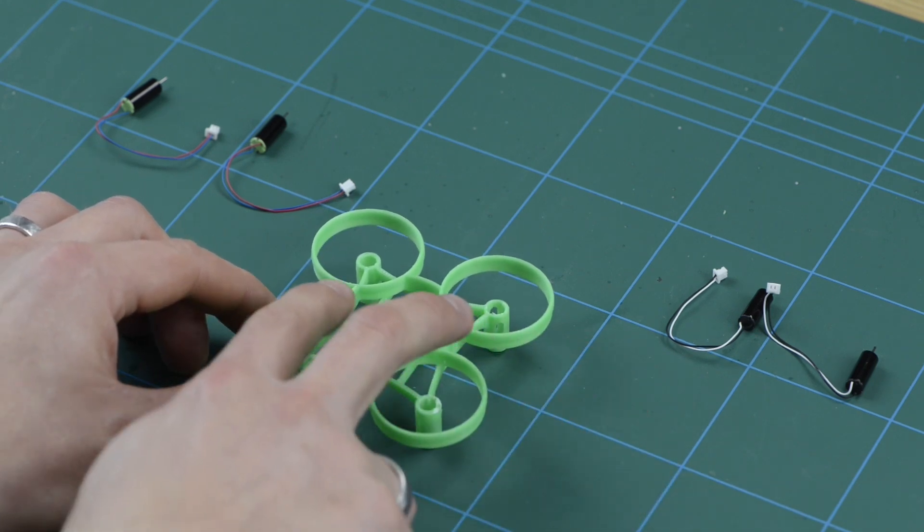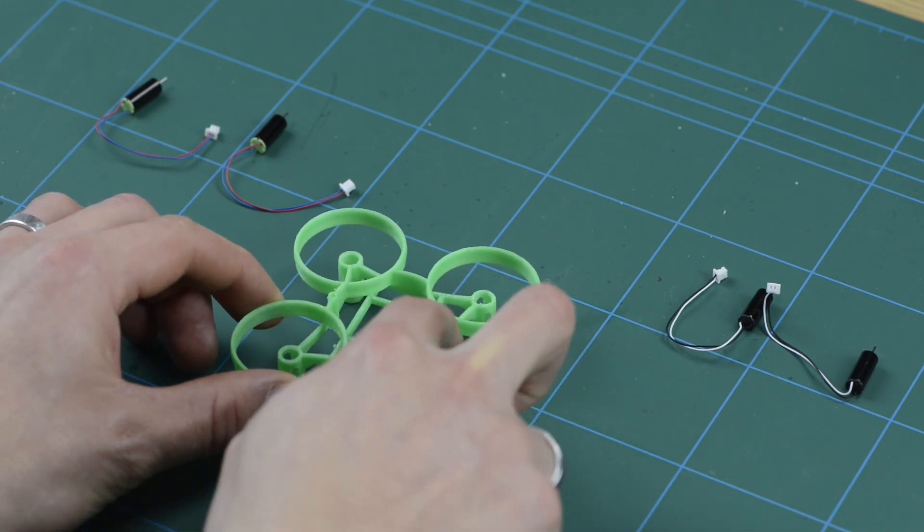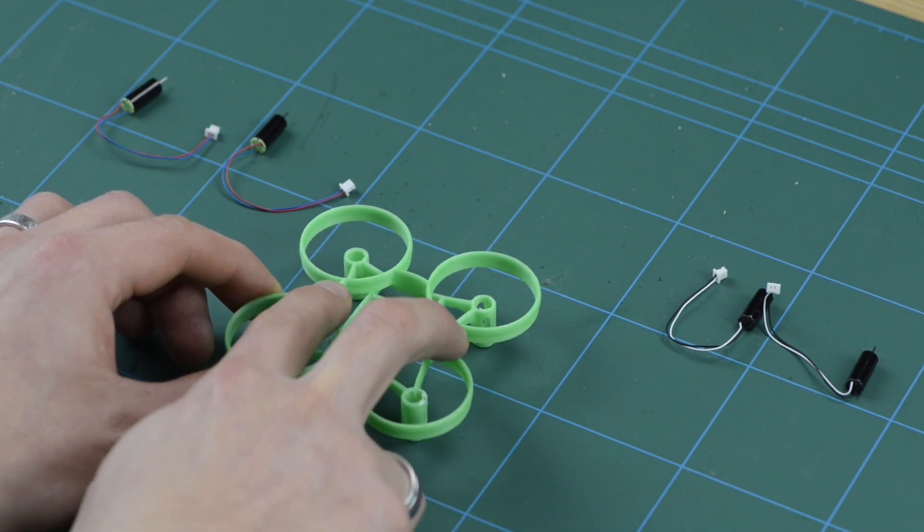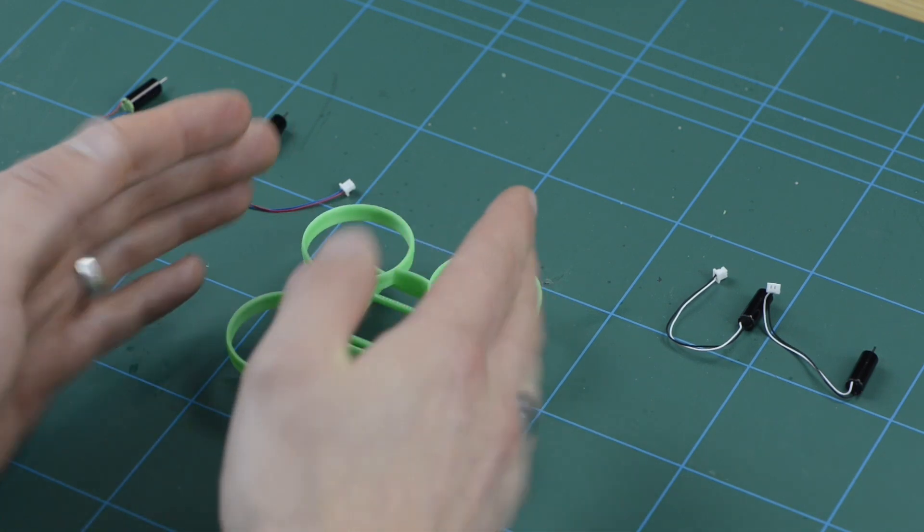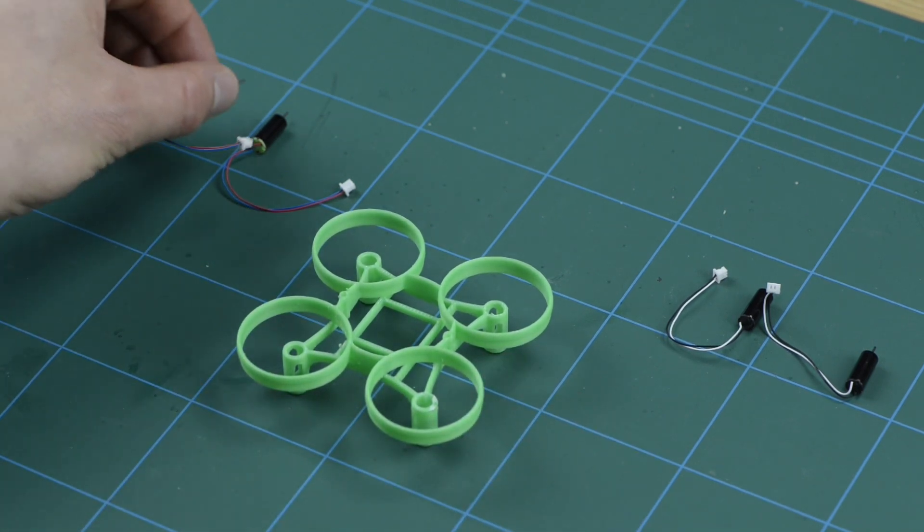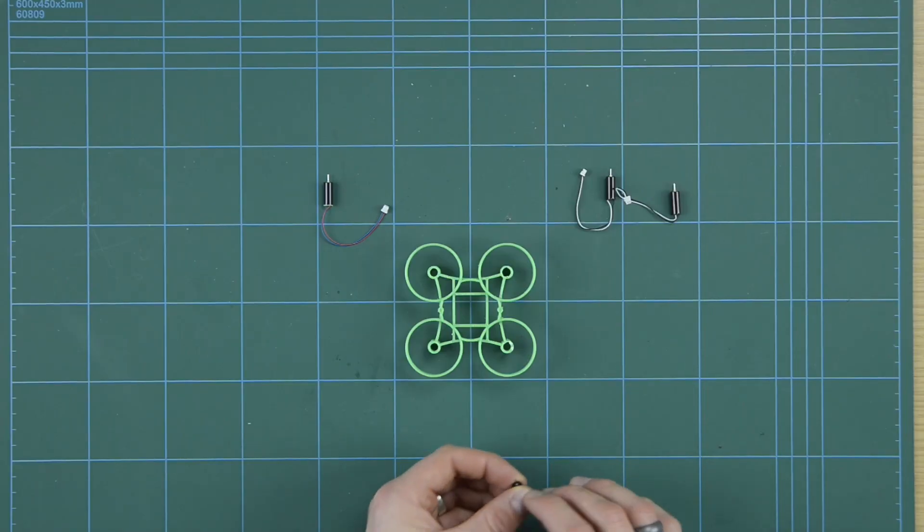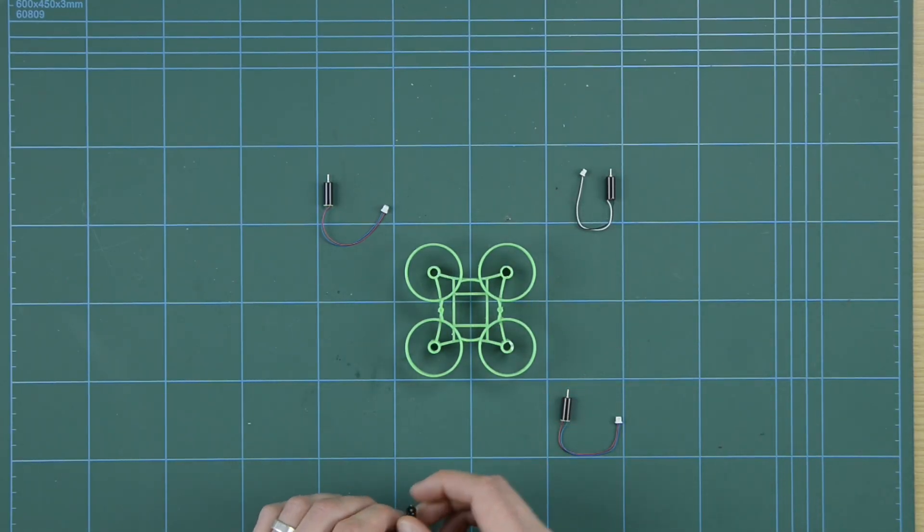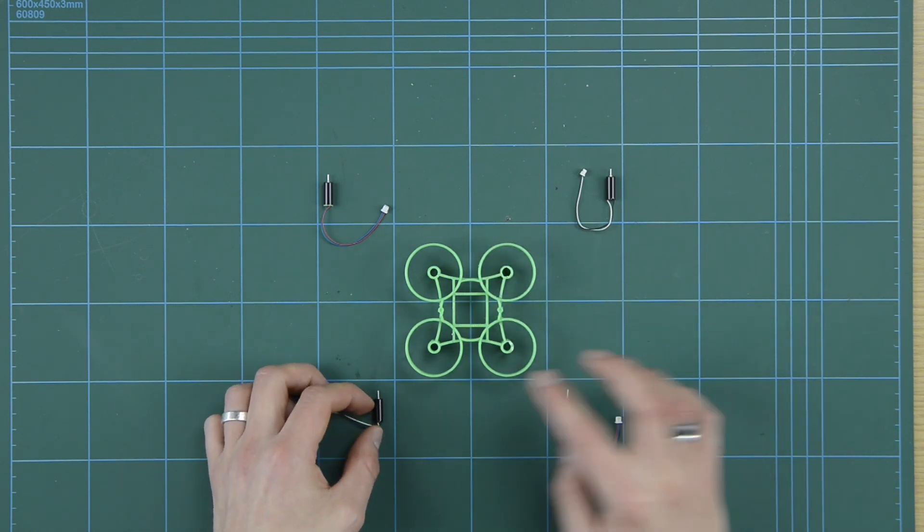So you place your frame flat on the table with the mounting holes. So you've got two small mounting holes here, which is where the flight controller will eventually go. So that we consider to be the left and right. So if you place it on the table this way, and then you want a clockwise motor in the top left and bottom right, and a counter-clockwise in the top right and bottom left.